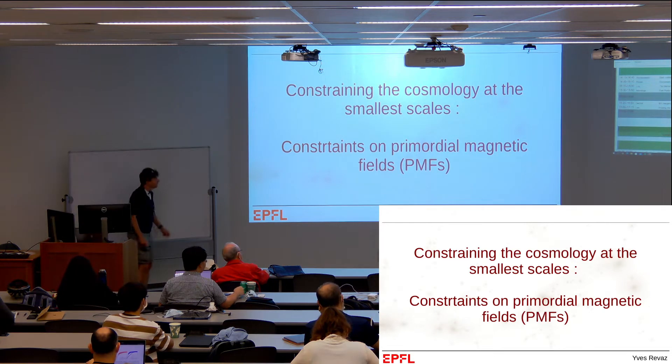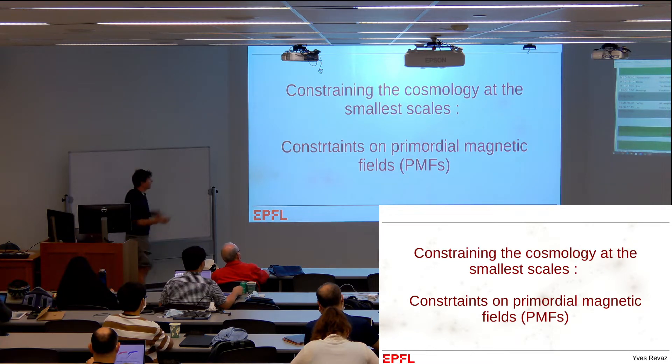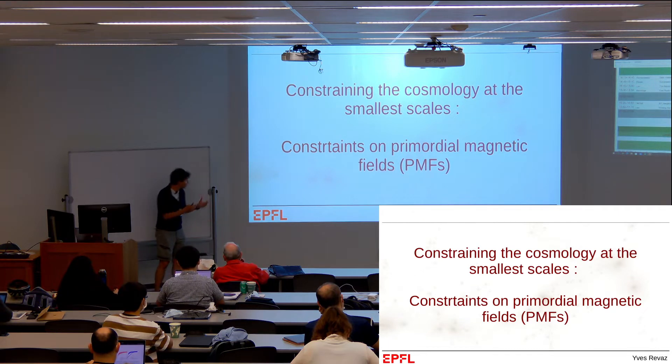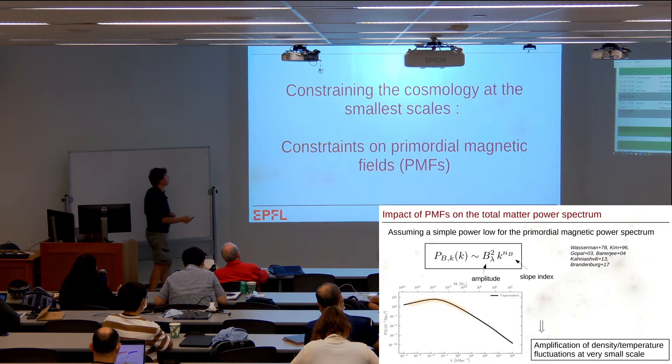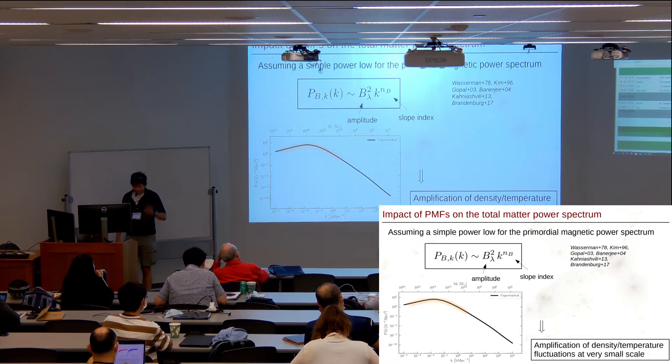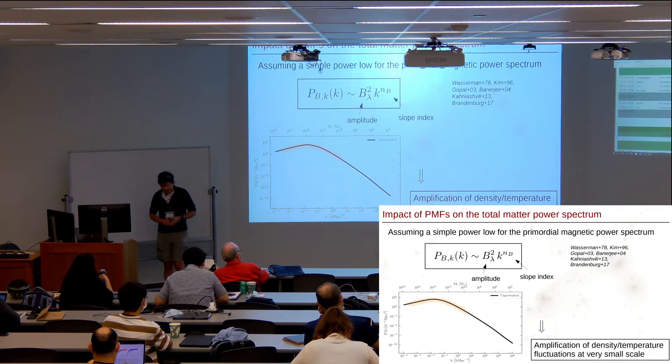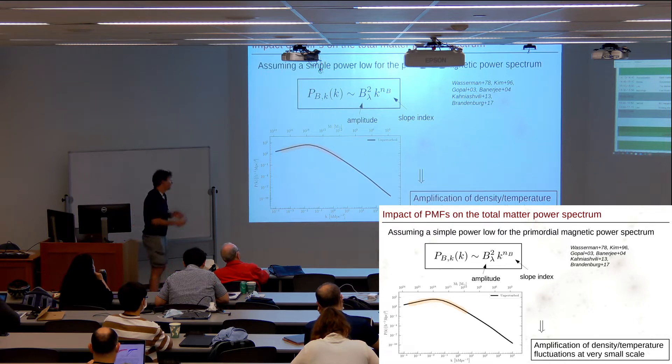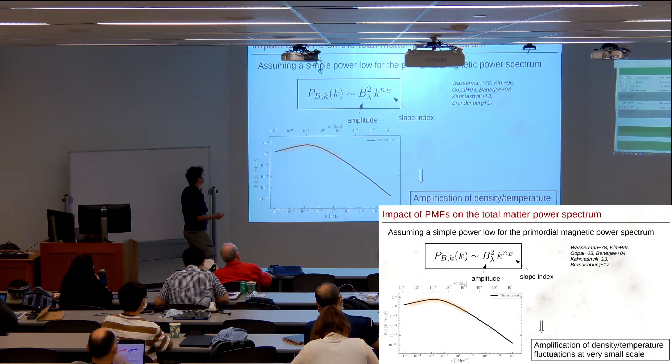Having all this in place, I told you we can use dwarf galaxies to constrain the small scales. Here's an example where we can obtain information and constrain primordial magnetic fields that could exist prior to reionization, which impact the power spectrum. Imagine that magnetic fields exist prior to reionization. They will couple with the gas and through gravity couple to the dark matter. The direct impact is that you will modify the total matter power spectrum at very small scales.